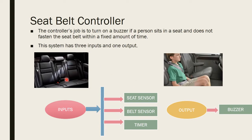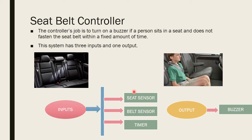When a person sits in the seat, the seat sensor gives information to the timer and the timer starts. Within a particular interval of time, the person should wear the seat belt. Otherwise, the timer gives information to the buzzer and a buzzer sound is heard, indicating the belt must be worn. If the person puts on the belt within the time interval, there will be no buzzer sound, because the belt sensor switches off the timer.